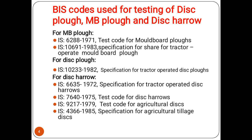For disk harrow, there are four IS codes: IS 6635, IS 7640, IS 9217, and IS 4366. These are the IS codes for disk harrow.